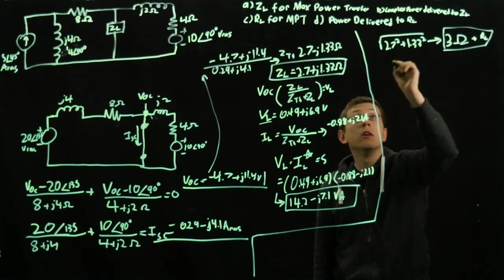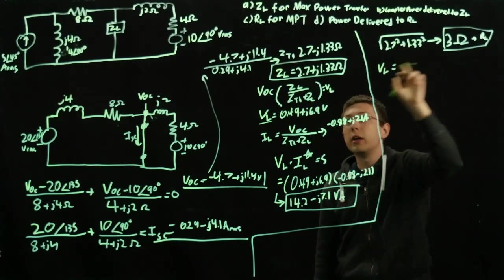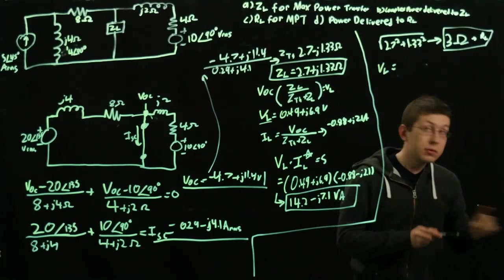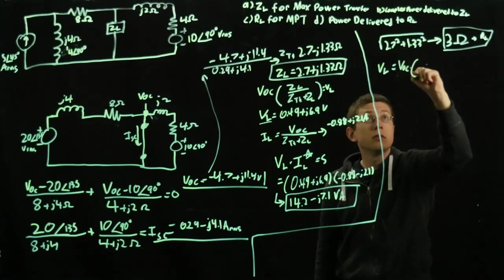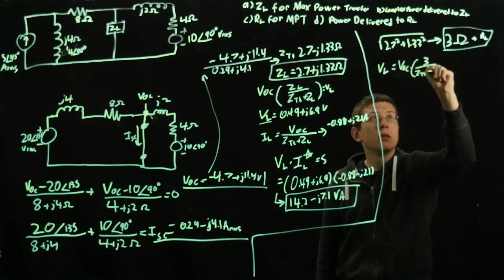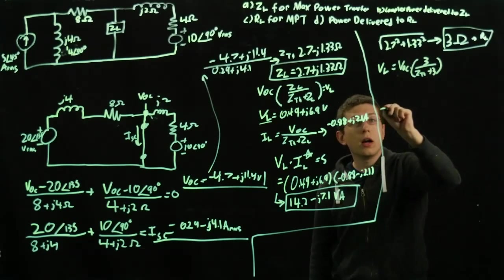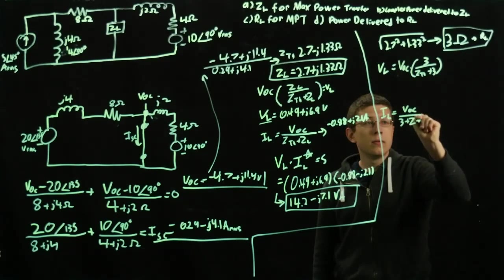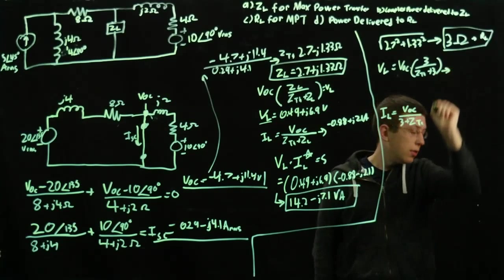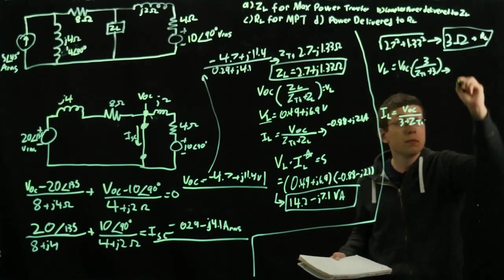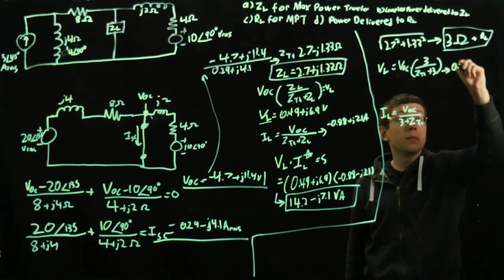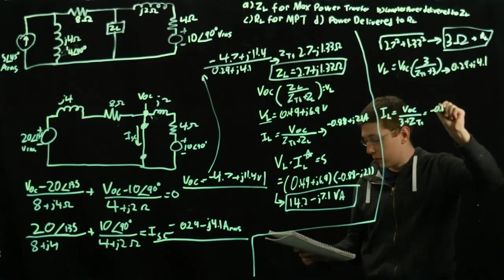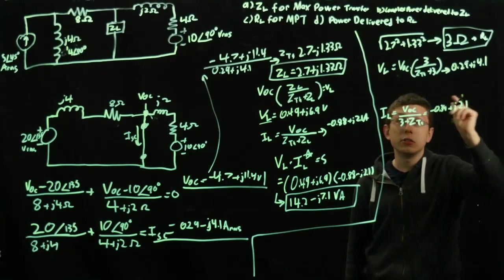We'll find VL equals, I'm going to replace ZL with 3 ohms. It'll be the open circuit voltage, our VOC, times 3 over Z Thevenin plus 3. And our IL will be our VOC over 3 plus Z Thevenin. When you do this math out, you find that our new VL equals 0.29 plus J4.1 volts. And our new IL equals negative 0.34 plus J2.1 amps. Same as before, VL times IL conjugate equals our power.